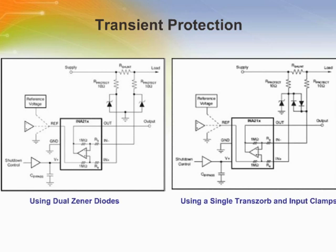In the event that low power Zener diodes do not have sufficient transient absorption capability and a higher power transorb must be used, the most package-efficient solution involves using a single transorb and a back-to-back diode between the device inputs.